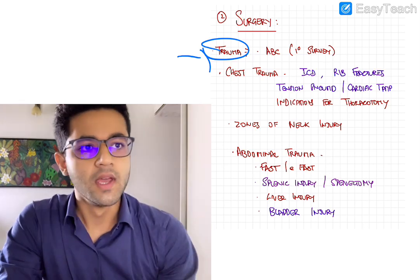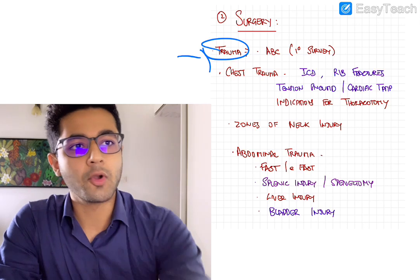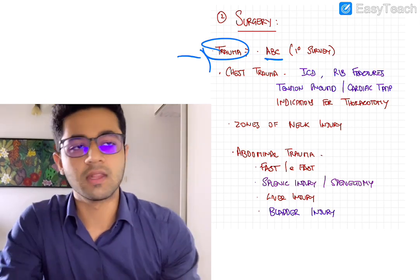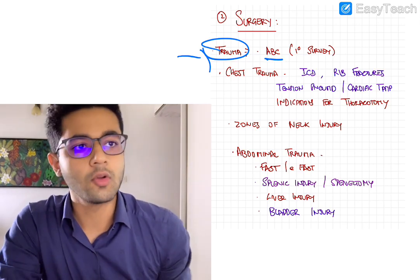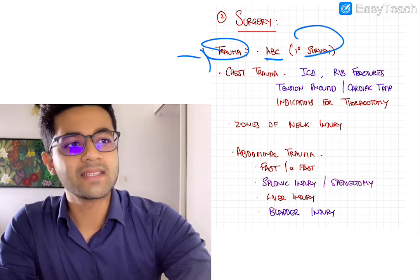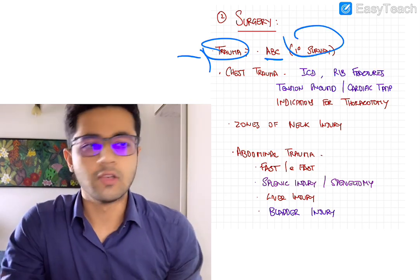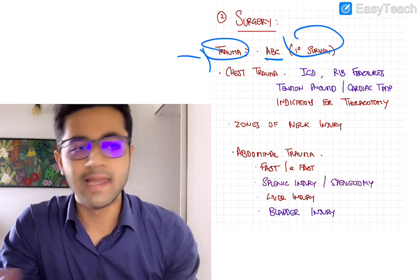and more importantly, the general management of trauma. So in this general management of trauma, it's important to know about the ABC, airway breathing and circulation, and DE also, and how to go about it. So basically, something about the primary survey indications for intubation and whatnot. So that is mildly important.